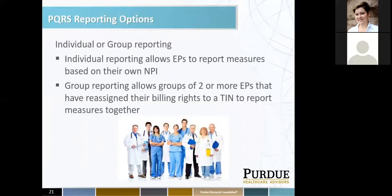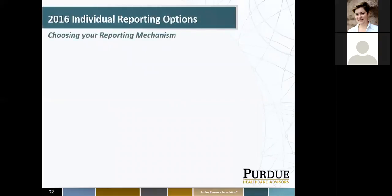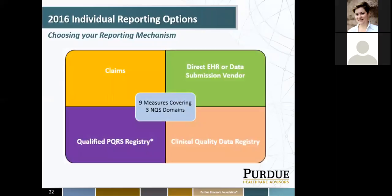Your PQRS reporting options: you have the option of reporting either as an individual provider or as a group. For individual reporting, it allows EPs to report measures based on their own NPI. Group reporting allows groups of two or more eligible providers that have reassigned their billing rights to a tax ID number to report measures together. For individual reporting, your options are claims, direct EHR or data submission vendor, a qualified PQRS registry, and clinical quality data registry — again, nine measures minimum across three domains.